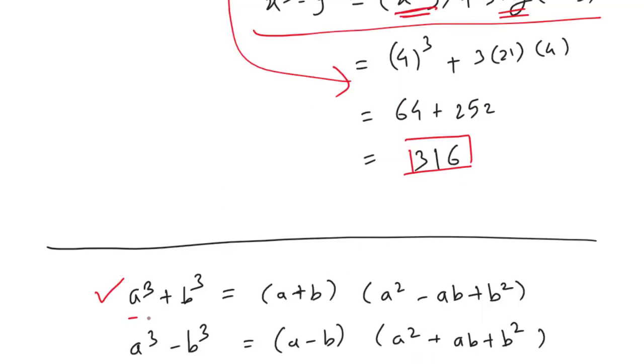And also you need to remember this structure: a³ + b³ = (a+b)(a² - ab + b²), and a³ - b³ = (a-b)(a² + ab + b²).